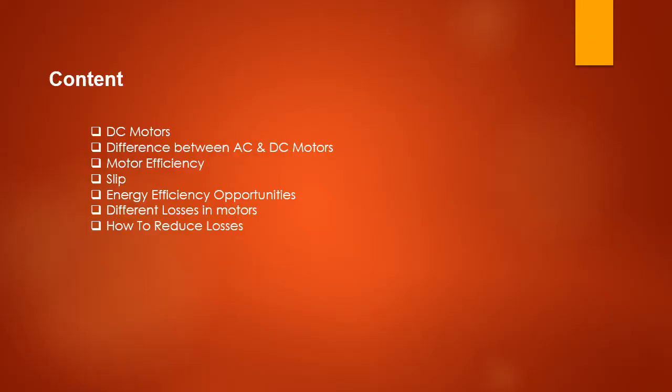In Part A of this chapter I discussed AC motors and their characteristics. Now in Part B I'm going to cover DC motors, the difference between AC and DC motors, motor efficiency, important calculations and formulas relevant to the examination, what slip is all about and its important formula, energy efficiency possibilities, and the different losses in motors and how to reduce them. Let's start with a short video on DC motors.